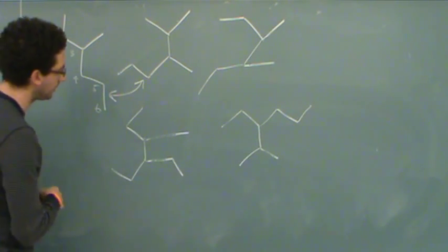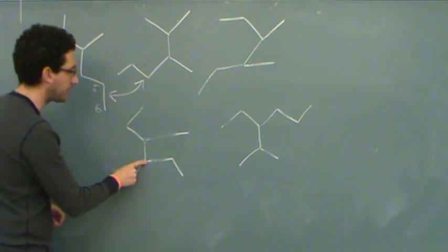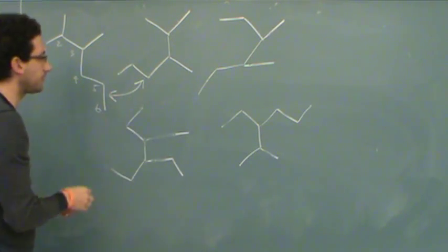4-ethyl, 3... oh, I guess you can start counting on this. 1, 2, 3, 4, 5, 6. That will give you a 3-ethyl, 4-methyl hexane. So that's different than all of these so far.